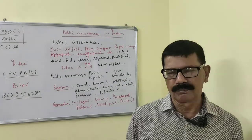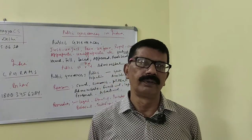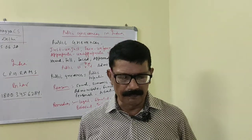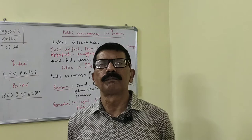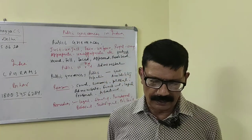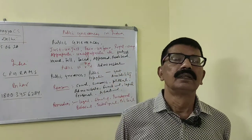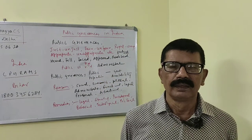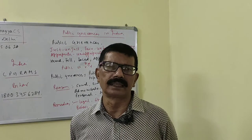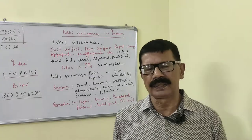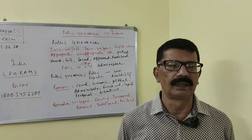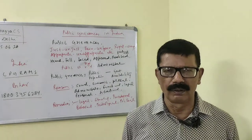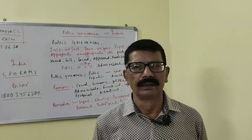Where Bihar is concerned, Bihar is doing very well in public grievance redressal. Bihar received the e-Governance Award in 2011 for Better Public Grievance Redressal Mechanism. Bihar introduced the Right to Information, Right to Government Services, and the Right to Public Grievance Redressal Act. Under the Chief Minister, there is a department called the General Administration Department, under which one institution called Bihar Administrative Reform Society works as a nodal agency for administrative reform in Bihar.